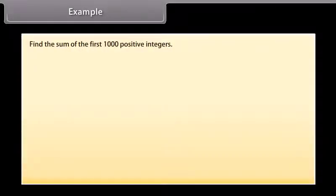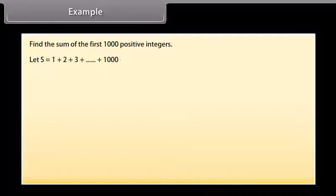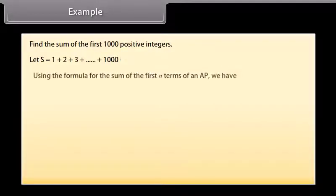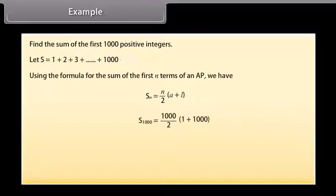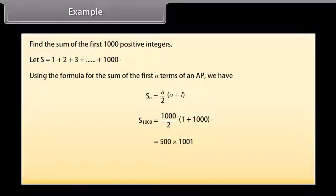Find the sum of the first 1000 positive integers. Let S equal 1 plus 2 plus 3 plus so on plus 1000. Using the formula for the sum of the first N terms of an AP, SN equals N over 2 times (A plus L). Substituting, S1000 equals 1000 over 2 times (1 plus 1000), which equals 500 times 1001, which equals 500500.